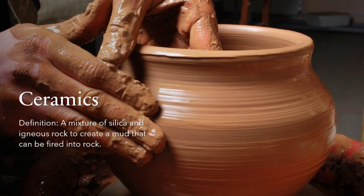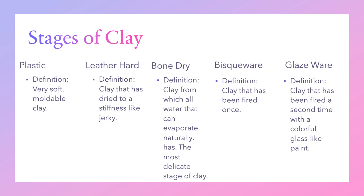Ceramics is a mixture of silica and igneous rock to create a mud that can be fired into rock — firing just means really hot cooking. There are five stages of clay: plastic (very soft and moldable), leather-hard (dried to a stiffness like jerky), bone dry (all water that can evaporate naturally has, and it is the most delicate stage), bisqueware (fired one time), and glazeware (fired a second time with a colorful glass-like paint).